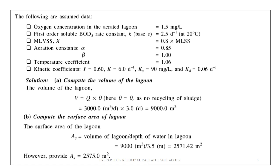First, we need to calculate the volume of the lagoon, which is Q × θ. Since there is no recycling of sludge, θ equals θc. Then we calculate the surface area of the lagoon, which equals volume divided by depth of water. The surface area comes out to approximately 2,575 m².